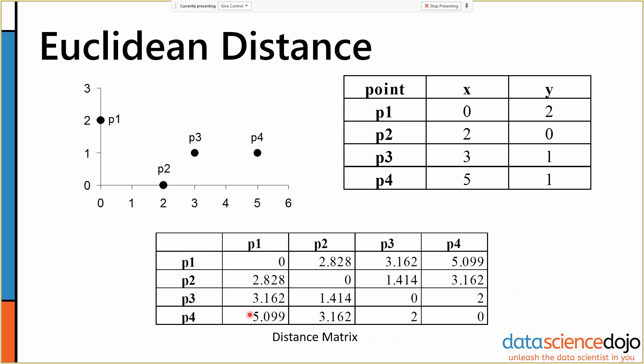So p1 and p4 are the most dissimilar. They're the farthest apart. Whereas p2 and p3 are the most similar. They're the closest together. p3 is also fairly similar to p4, whereas p2 is somewhat less similar from p4.